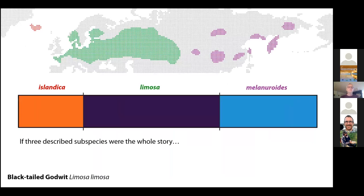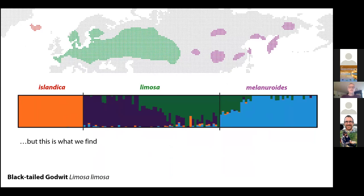With that as background, I hope you can understand my slides. If these three described subspecies of the black-tailed godwit were the whole story — meaning each is deeply diverged from the others with no current or historical intermixing — we would have an admixture plot with three inferred deeply diverged and very clean lineages within the samples of each population.